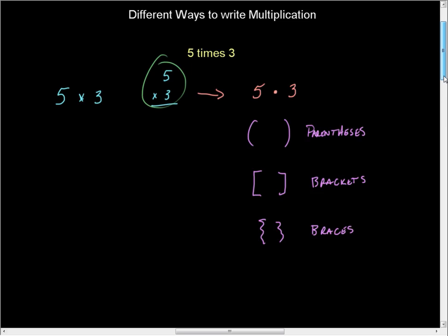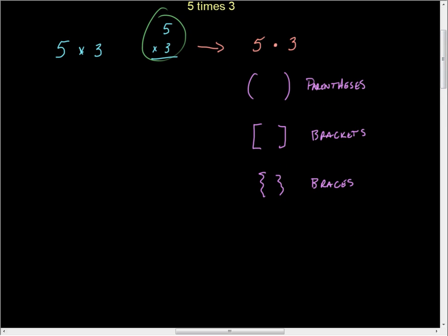So now, I can use these to say 5 times 3. I can actually write it as 5 times 3 or (5)(3). And so, if you see a number that's right next to a set of parentheses, that means multiply. Same way with brackets. I can write 5 times 3. Or, I can simply write [5][3].